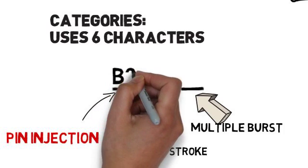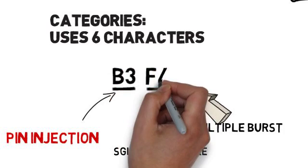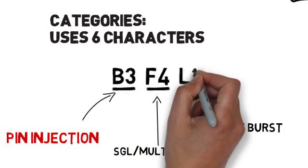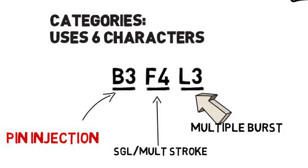In this example, we see that B3 is the waveform set and level. F4 is the single stroke and multiple stroke waveform set and level, with L3 being the multiple burst waveform set and level.